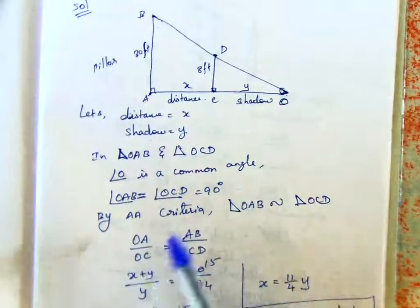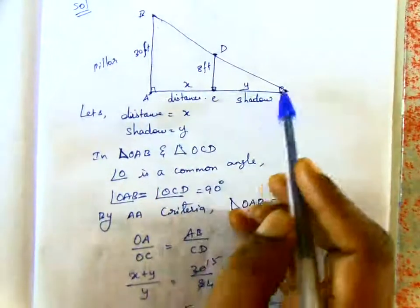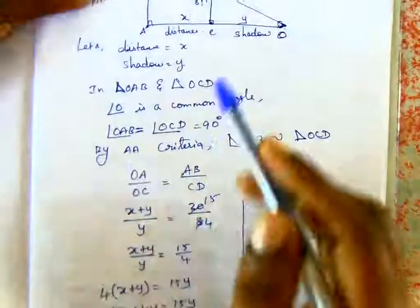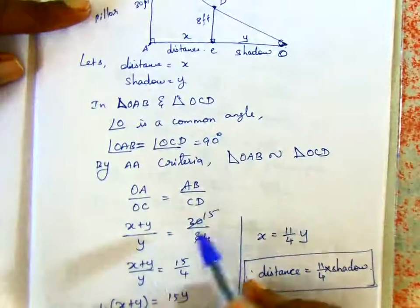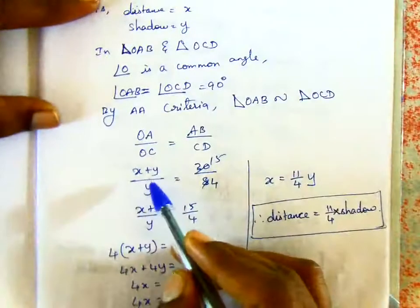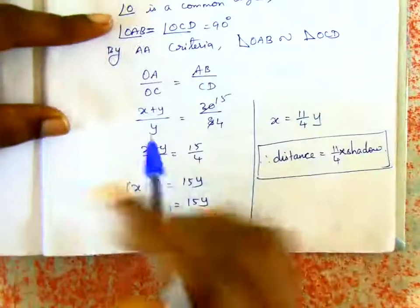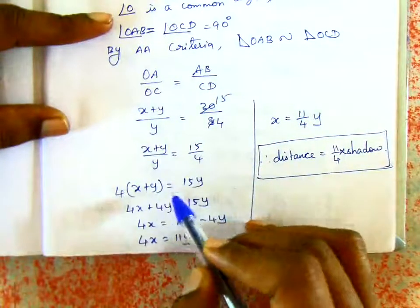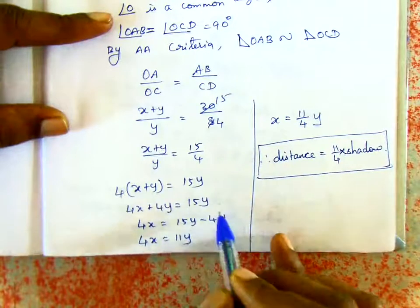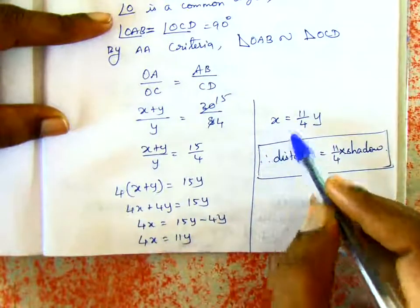It is the corresponding angle. So if (x+y)/y equals 30/8, cross multiply: 4 into (x+y) equals 15y. So if you multiply, 4x + 4y = 15y, therefore 4x = 11y.